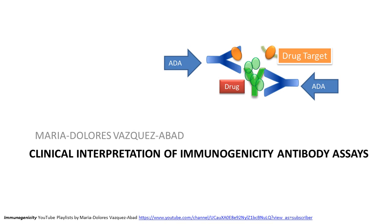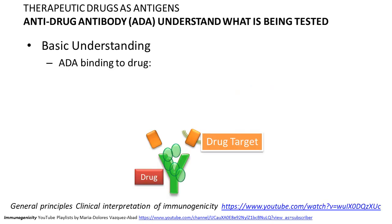Clinical Interpretation of Immunogenicity Antibody Assays Part 2 is a high-level explanation of the assay, so that you can better understand how to interpret the results and understand what is being assayed and how. Before we go into the assay for detecting anti-drug antibodies, a more thorough explanation was done on Part 1 of the Immunogenicity Series on YouTube.